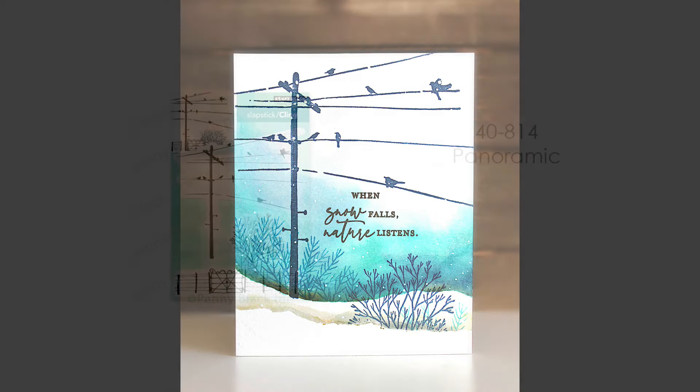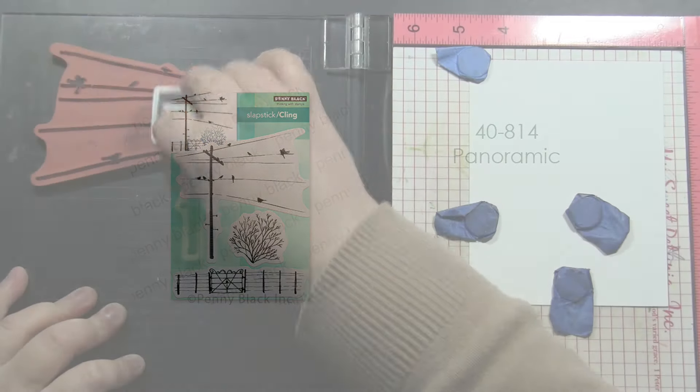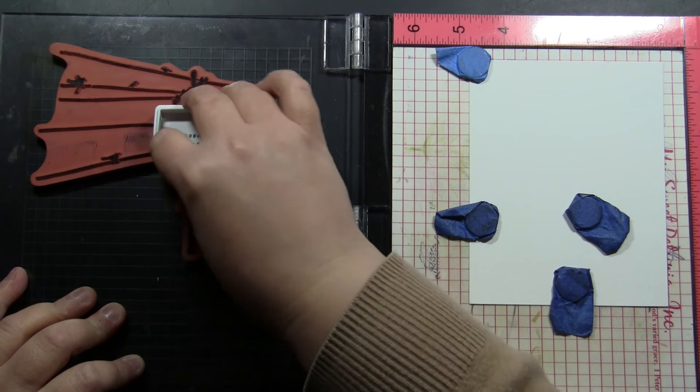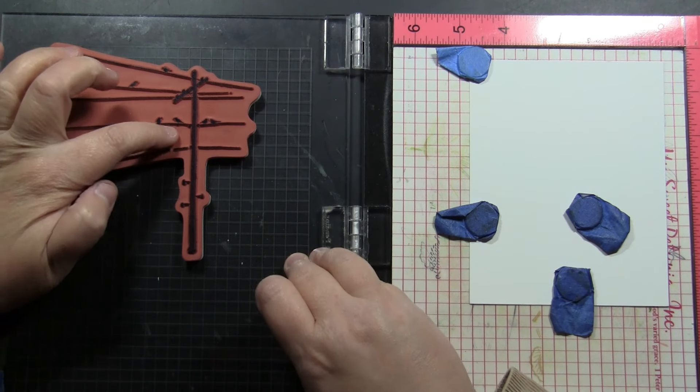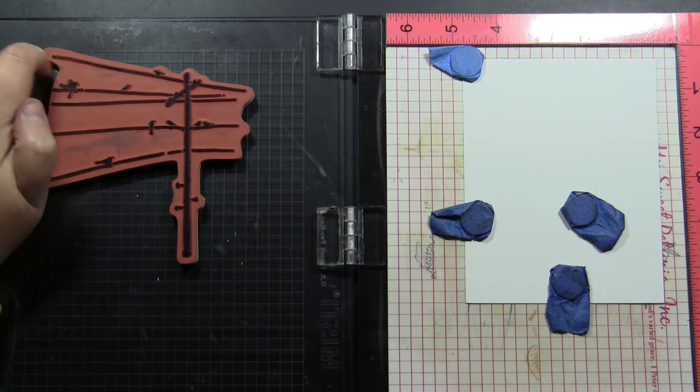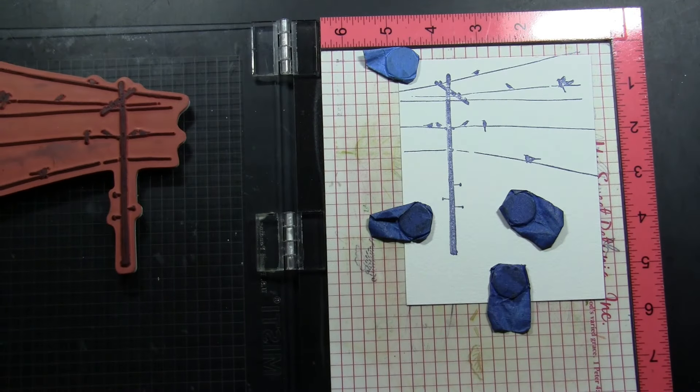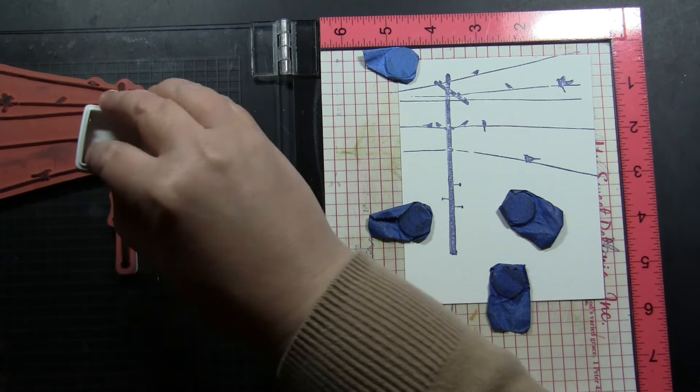The stamp that we will be featuring is a new cling stamp 40-814 panoramic. We're going to start by stamping using the MISTI stamp positioning tool and I'm stamping on Decanson 140 pound watercolor paper. I am inking up my stamp using archival ink in the color of cobalt. This is a ranger archival ink pad, it is the mini size.